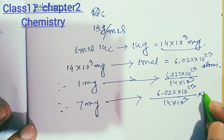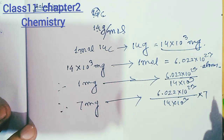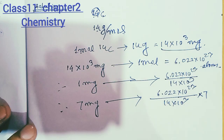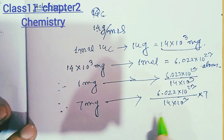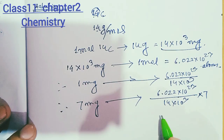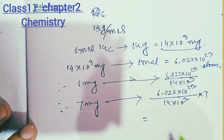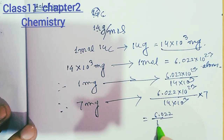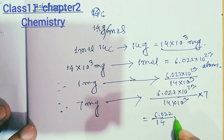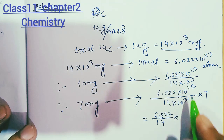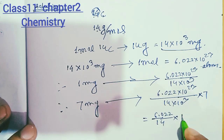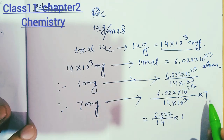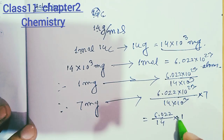So 7 milligrams gives us the number of atoms. This means we are going to use 6.022 divided by 14, into 10²³ divided by 10³, multiplied by 7.